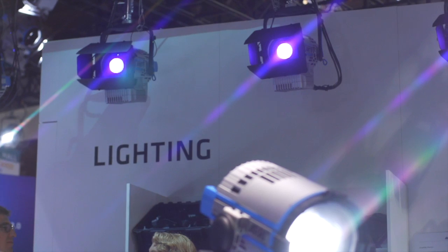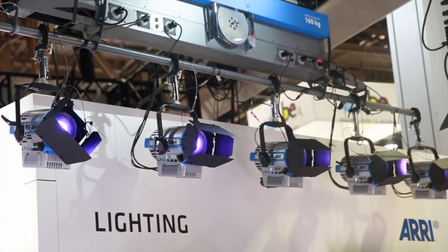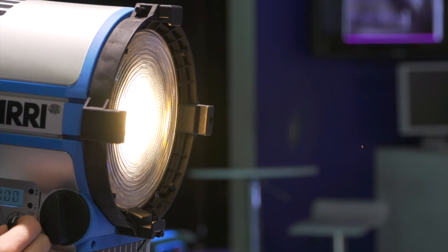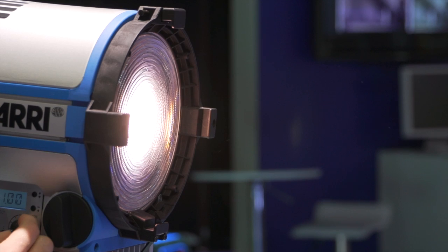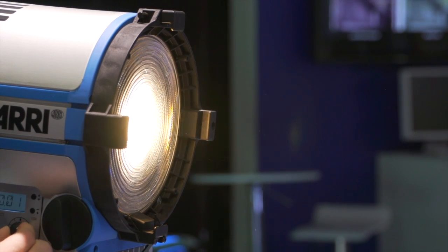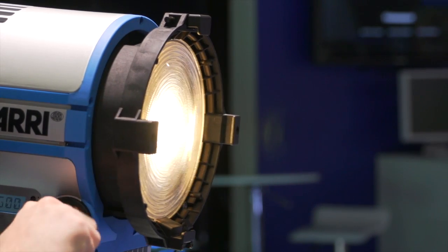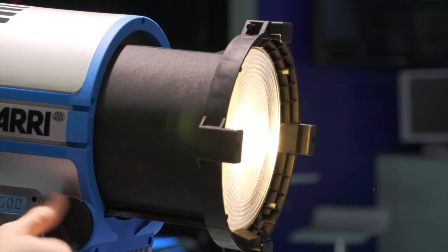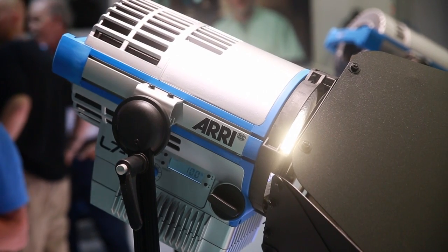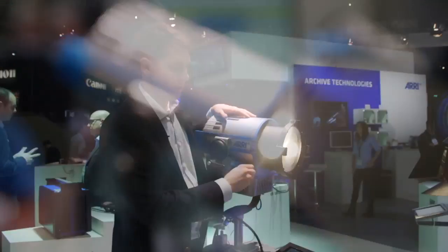This is great if you're matching tungsten fixtures already in a rig, or maybe even other LED lights. Not only can you adjust the color temperature, but you can also adjust the plus or minus green point of the fixture. And because it's a Fresnel light, you can focus the light and cut the light with barn doors, just like you would any other Fresnel light.